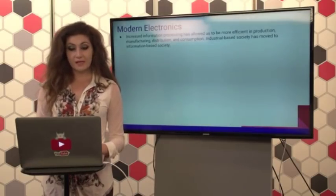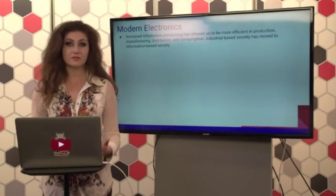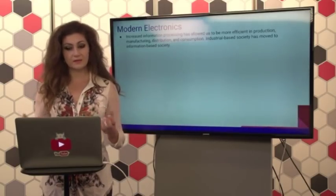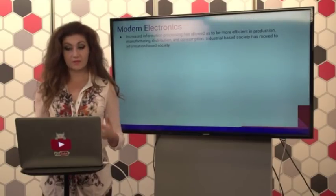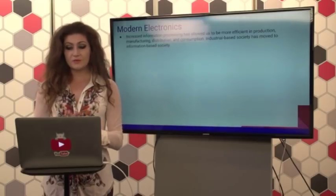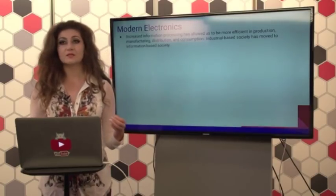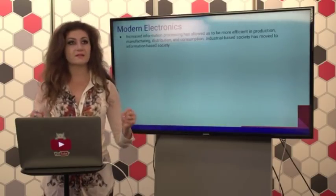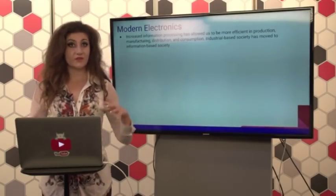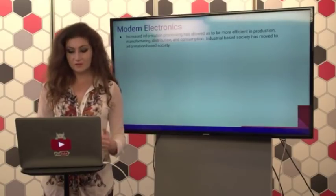In modern day, we still continue to do all of this research, even more so, since so many of the things we interact with are electronic devices. All of this increase in information processing has allowed us to become more efficient in production, manufacturing, distribution, and consumption. This industrial-based society has moved to an information-based society. Before, in the 1950s and 1960s, the world was concerned about making products to improve people's lives. Now we've already done that — and we're just trying to make the things we've created even more efficient, more useful, and faster.